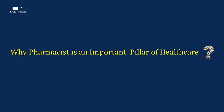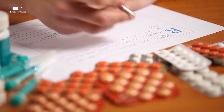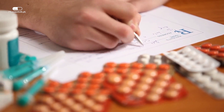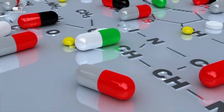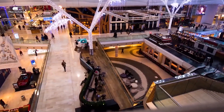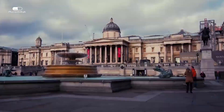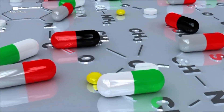Why is a pharmacist an important pillar of healthcare? One may ask why the presence of a qualified pharmacist is so important. According to the World Health Organization and research concluded by Johns Hopkins University, there are a recorded average of 2,500,000 deaths only in the USA annually due to medication errors or misuse of medicines. And one can only imagine how many lives are being lost in developing countries. So the role of the pharmacist must be taken into consideration.